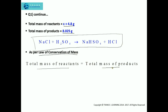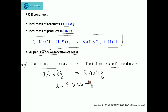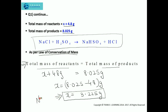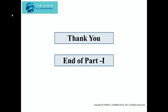Remember, we cannot apply the law of conservation of mass to an unbalanced equation — we need to balance it first. Setting up the equation: x + 4.8 g = 8.025 g, so x = 8.025 − 4.8 = 3.225 grams. Therefore, the mass of sodium chloride is 3.225 grams. Part 1 ends here. You can watch the second part to view other questions in this video. Thank you.